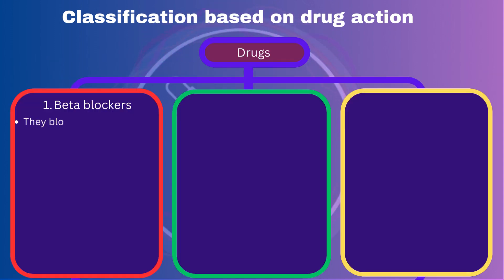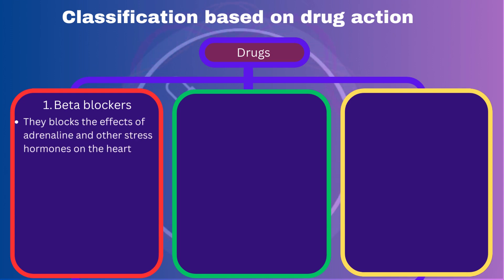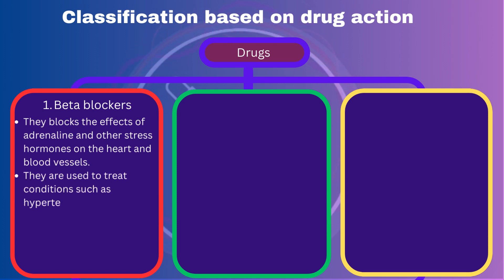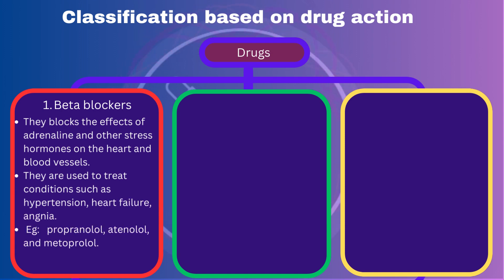Beta-blockers: They block the effects of adrenaline and other stress hormones on the heart and blood vessels. Beta-blockers are used to treat conditions such as hypertension, angina, and heart failure. Examples of beta-blockers are propranolol, atenolol, and metoprolol.